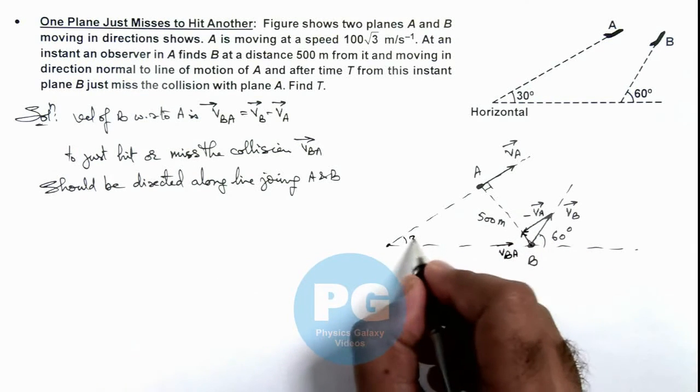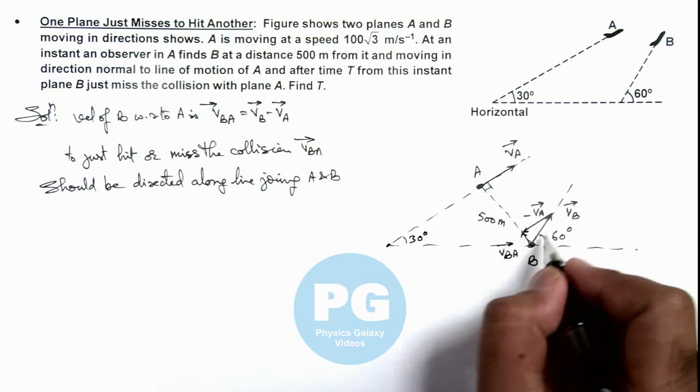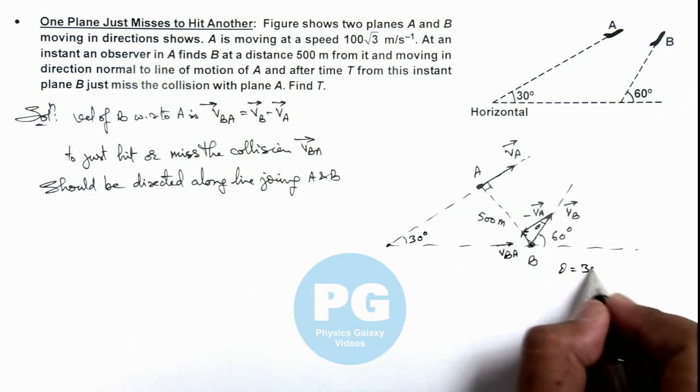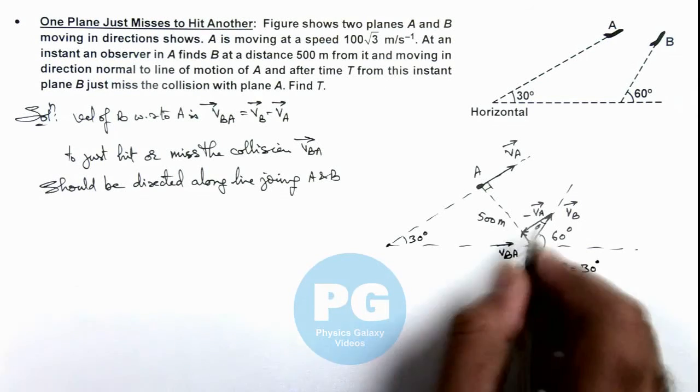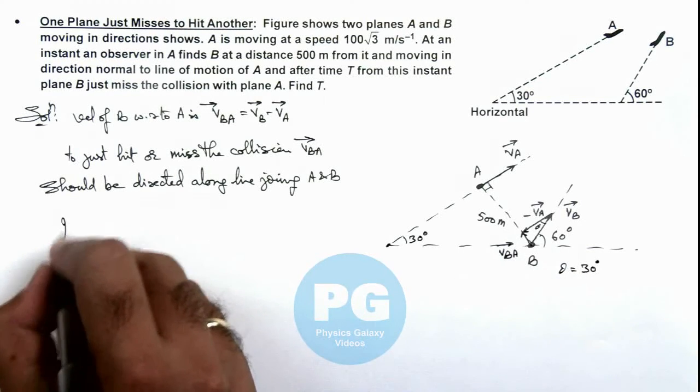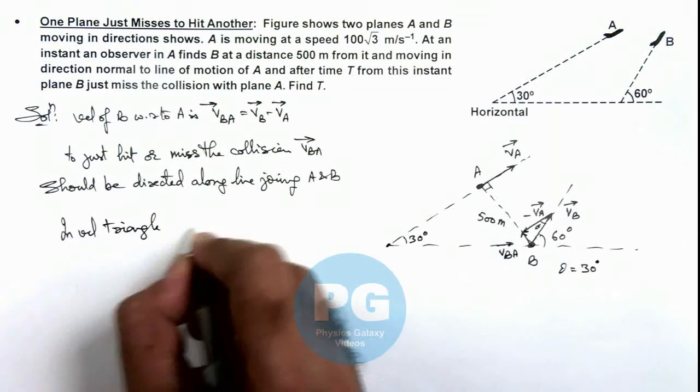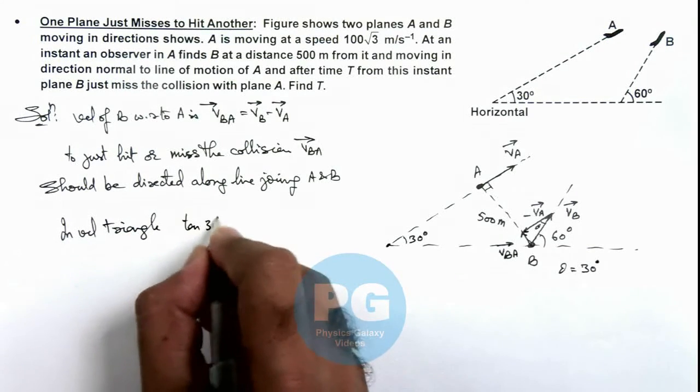So here if this angle is 30 degrees and this angle is 60, this can also be taken as 30 degrees. Say if this is theta, then theta can be written as 30 degrees. So in this situation we can write in the velocity triangle: tan 30 degrees is equal to...